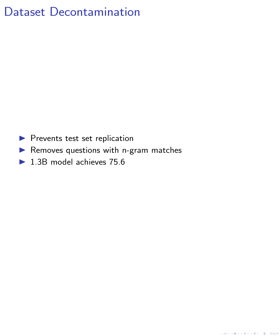Finally, we decontaminate the tiny GSM dataset to prevent replication of the test set by checking for n-gram matches with the test set. Questions with n-gram matches are removed from the dataset. We evaluate the robustness of the models on the SVAMP dataset, which consists of 1,000 math word problem questions with variations. The 1.3B model achieves 75.6% accuracy on the SVAMP dataset without further fine-tuning, further demonstrating the robustness of our models.